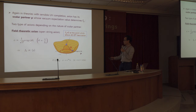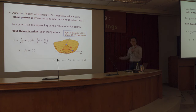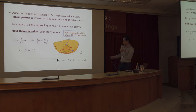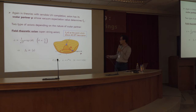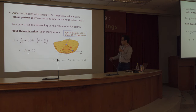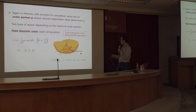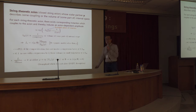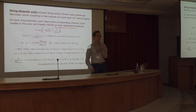For field theory axions, this is the geometry of the two-dimensional field space involving the angular direction — the axion — and the radial direction — its scalar partner. It is obvious that f_a, the period of the axion, is simply determined by the vacuum value of ρ, i.e., the modulus part of the complex scalar φ. But there are quite different types of axions which we might call string-theoretic axions.